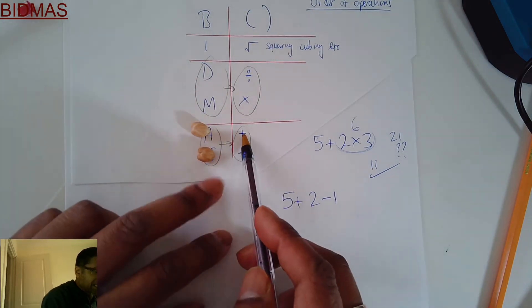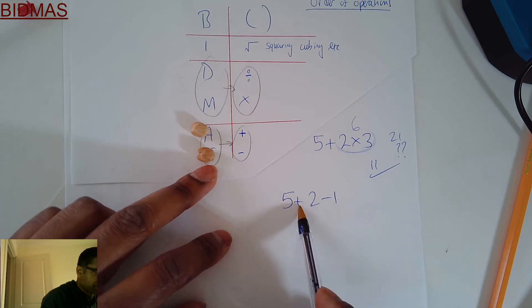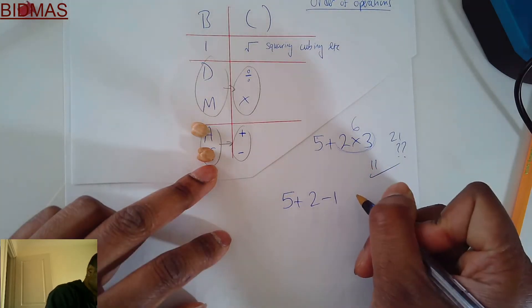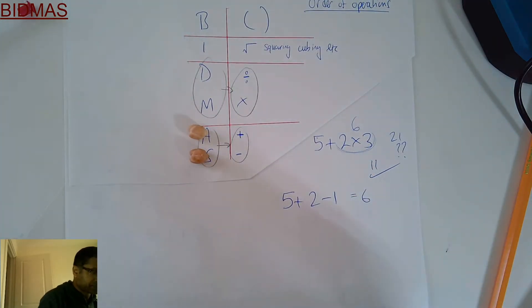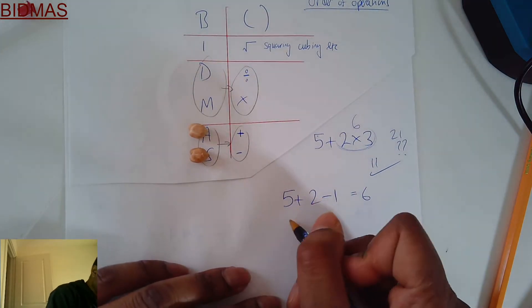Then what you might want to do is, because adding is above taking away, you'd want to do adding first. So you do 5+2=7, 7 take away 2 is 6. Perfectly okay.